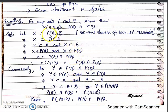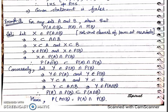So every element of P(A∩B) is an element of P(A)∩P(B), which means P(A∩B) is a subset of P(A)∩P(B).